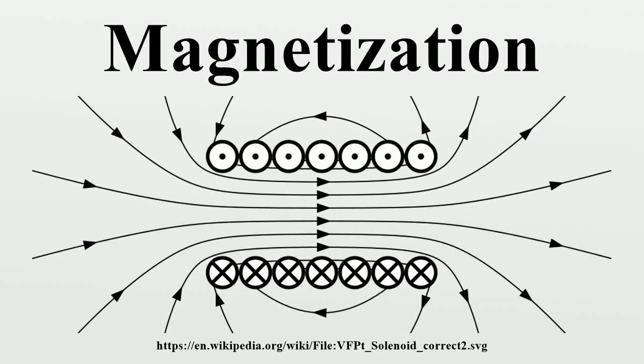In classical electromagnetism, magnetization or magnetic polarization is the vector field that expresses the density of permanent or induced magnetic dipole moments in a magnetic material.